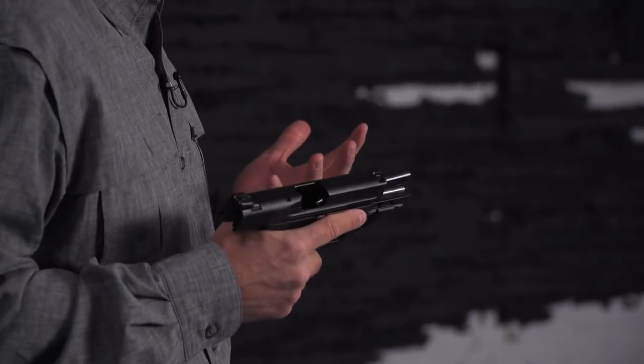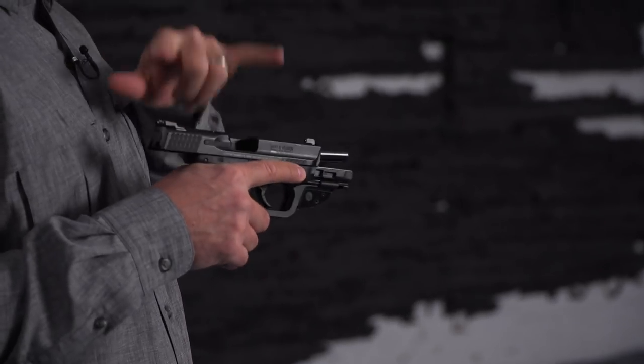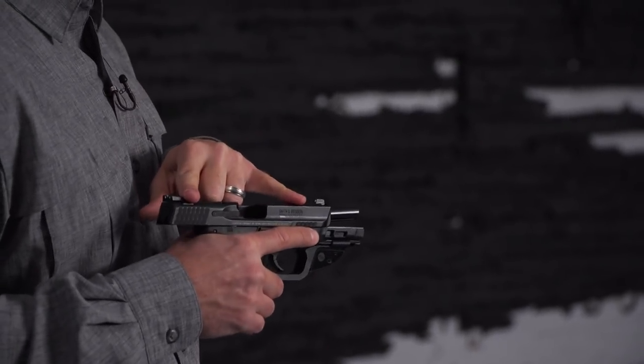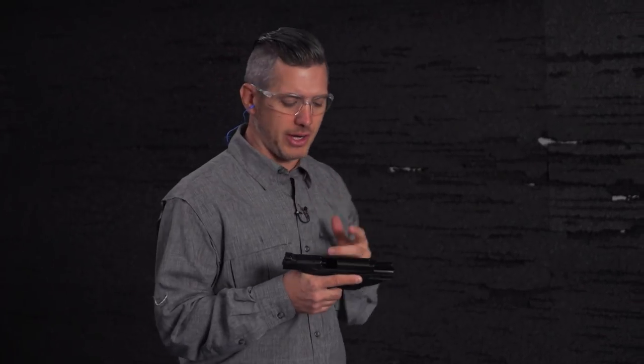And one of the best drills for that is the ball and dummy drill. A ball and dummy drill is basically dummy rounds mixed in with live fire rounds, and so you're going to see what happens on target. But when you have a laser on the gun, you can really see what happens on target. Let me show you what we're talking about here.